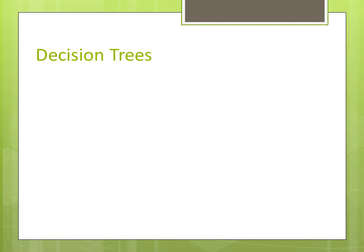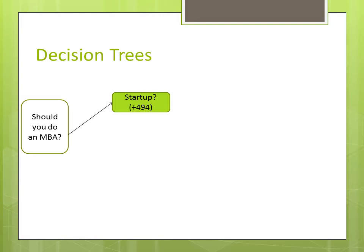The next technique we study is known as decision trees. Sometimes there's uncertainty involved in our business processes and we need to update our decisions based on what may or may not happen, taking into account risks and uncertainties in a way that gives us the overall best outcome. Let's take the very same decision that you're all facing: should you do an MBA? Let's say there are two things in your short-term career you're unsure about — should you go ahead and start up, or should you try and get a promotion at work?